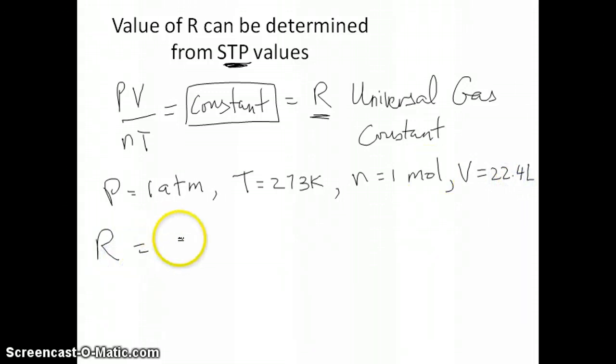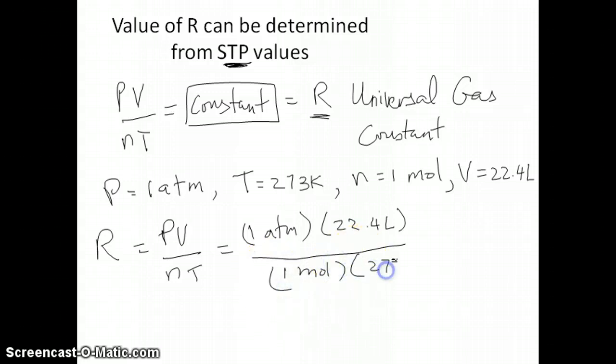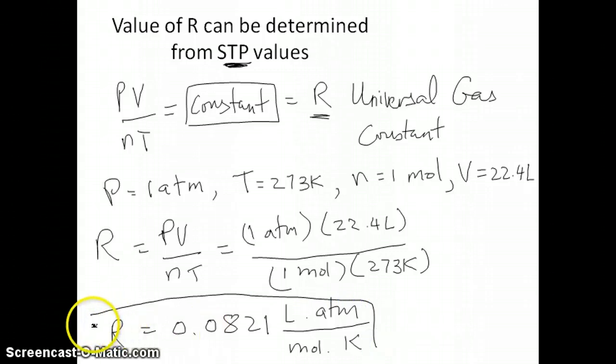So then what you can do is use this to calculate R, because R is equal to PV over nT. In other words, you would just plug in one atmosphere, volume will be 22.4 liters, N would be one mole, and T would be 273 Kelvin. You plug all these numbers into the calculator, what you get is 0.0821. Liter atmosphere is the unit on top, and mole Kelvin is the unit at the bottom. And that's what the value of R is in units of liter atmosphere per mole Kelvin.